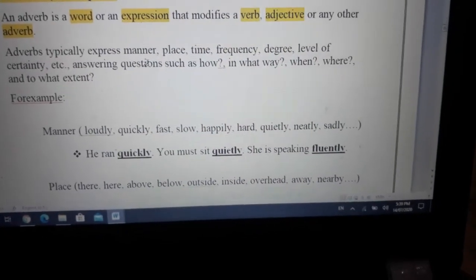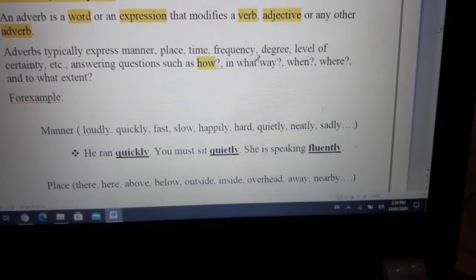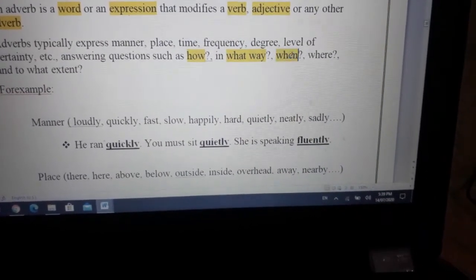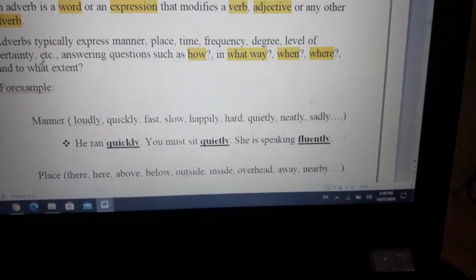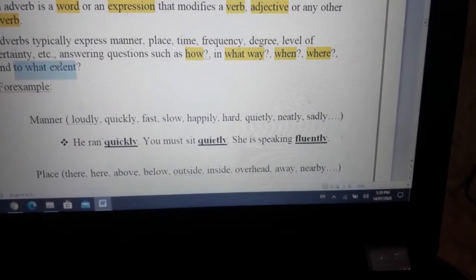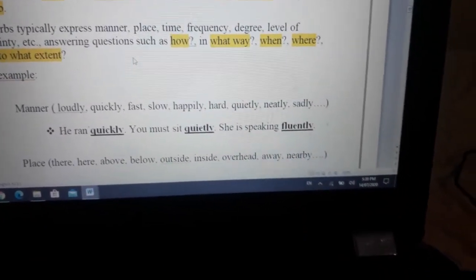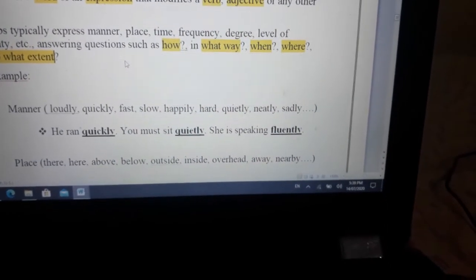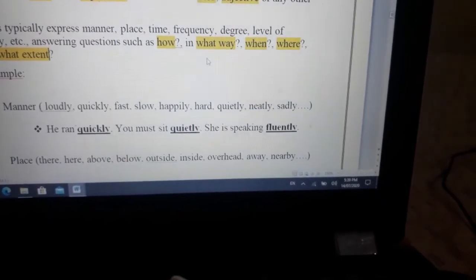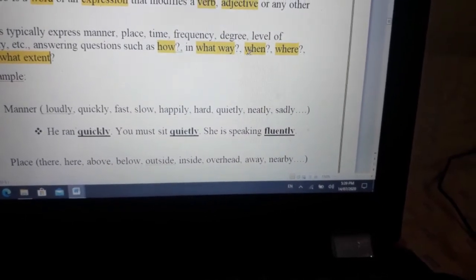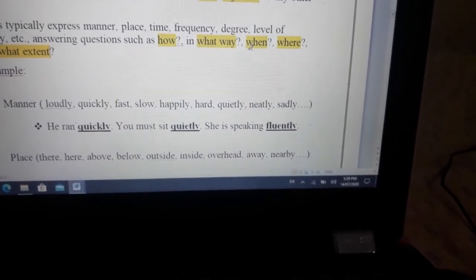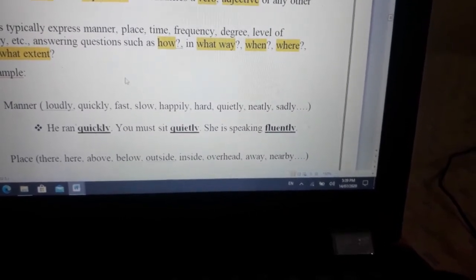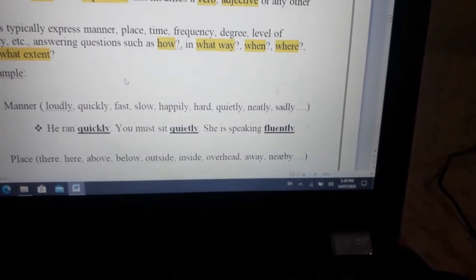Adverbs answer questions such as how, in what ways, when, where, and to what extent. How means adverb of manner - how something happens or in what way it's happening. When refers to when it happened or is happening, where it happened, and to what extent the thing happened or something is happening.